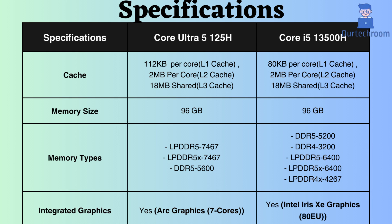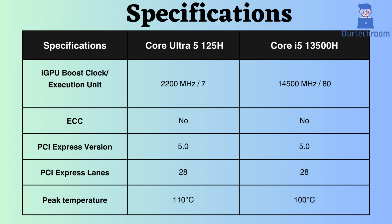Both processors feature integrated graphics. The Core Ultra 5 125H supports Arc Graphics with 7 cores, while the Core i5-13500H supports Intel Iris Xe Graphics with 80 EU. Additionally, the graphical frequency of the Core Ultra is 2200 MHz, whereas that of the Core i5-13500H is only 1450 MHz. If integrated graphics performance is crucial for your needs, such as basic gaming or light video editing without a dedicated GPU, the Ultra 5 125H might be the preferable choice.